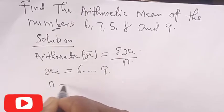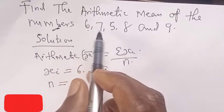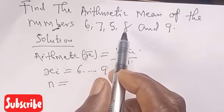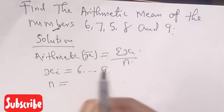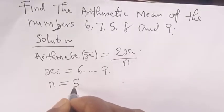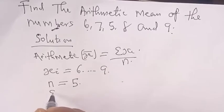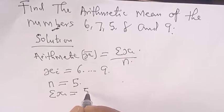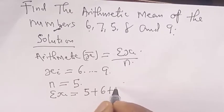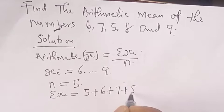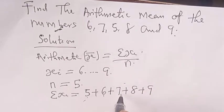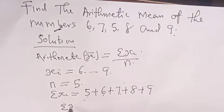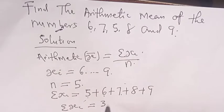Our n is giving us how many times does 6 appear: 1, 7 appear: 1, 5 appear: 1, 8 appears: 1, and 9 appears: 1. That is 1, 2, 3, 4, 5. Then our summation xi will be equal to 5 plus 6 plus 7 plus 8 plus 9. That is, summation xi is equal to 35.